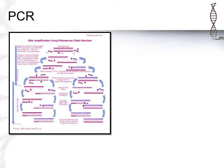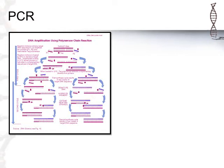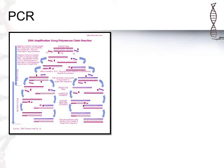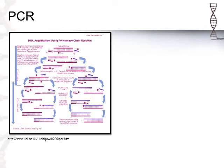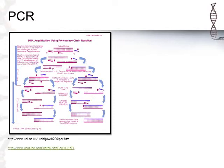PCR stands for polymerase chain reaction. It's a series of steps used to amplify DNA — think of it as a photocopier for DNA. We're using what we know about the process of replication to make many, many copies of our DNA.